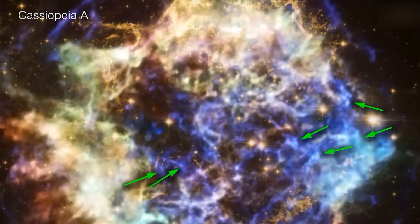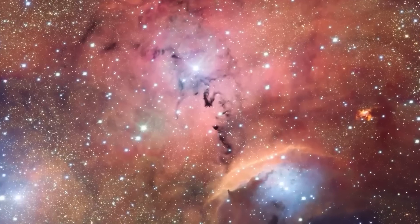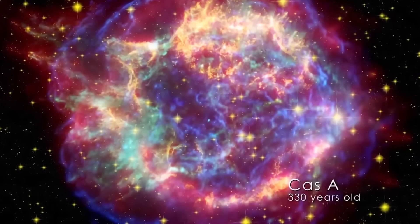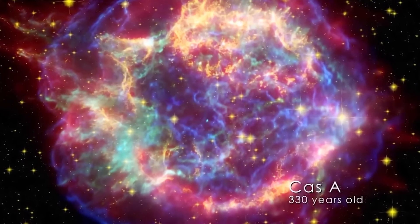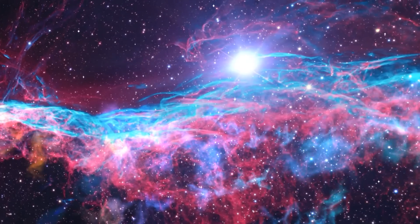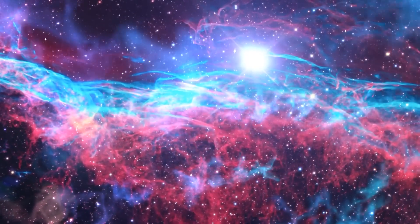Within the bubble and running to its center are bright pink clumpy filaments, which represent material from the exploded star. These filaments produce emissions from heavy elements like oxygen, neon and argon, which the doomed star forged via nuclear fusion prior to its destruction.